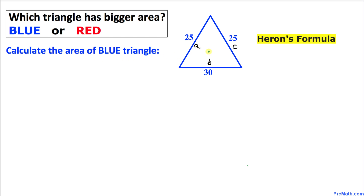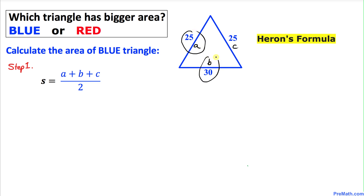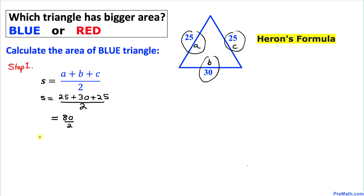Let's go ahead and calculate the area of the blue triangle first. The very first step is to calculate the value of S, which is always equal to A plus B plus C divided by 2. In our case, A is 25, B is 30, and C is 25. So S equals 25 plus 30 plus 25 divided by 2, which gives us 80 divided by 2. So S turns out to be 40.